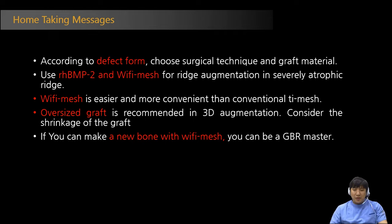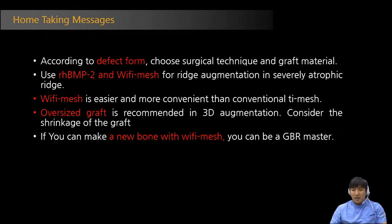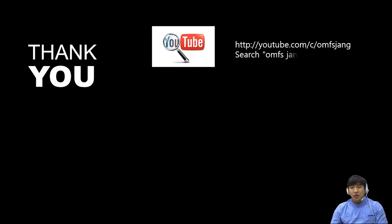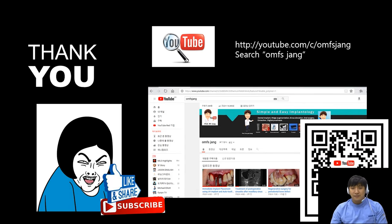Use rhBMP2 and Wi-Fi mesh for ridge augmentation in severely atrophied ridge. Wi-Fi mesh is easier and more convenient than conventional titanium mesh. Oversized graft is recommended in three-dimensional augmentation — consider the shrinkage of the graft. If you can make new bone with Wi-Fi mesh, you can be a GBR master. Thank you for watching. You can watch my video again on my YouTube channel. You can find me at this address. Don't forget the like and subscribe buttons. Coel Medi supports a lot of products for implant and bone graft. I am using them very well in my clinical practice. I hope to see you again at another seminar in the future. Goodbye.